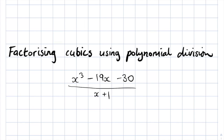For example, we could divide by x plus 1, but the problem is if it's not one of the true factors we'll have some kind of remainder left over. This gives us a quadratic times that factor but with something left over as a remainder at the end.